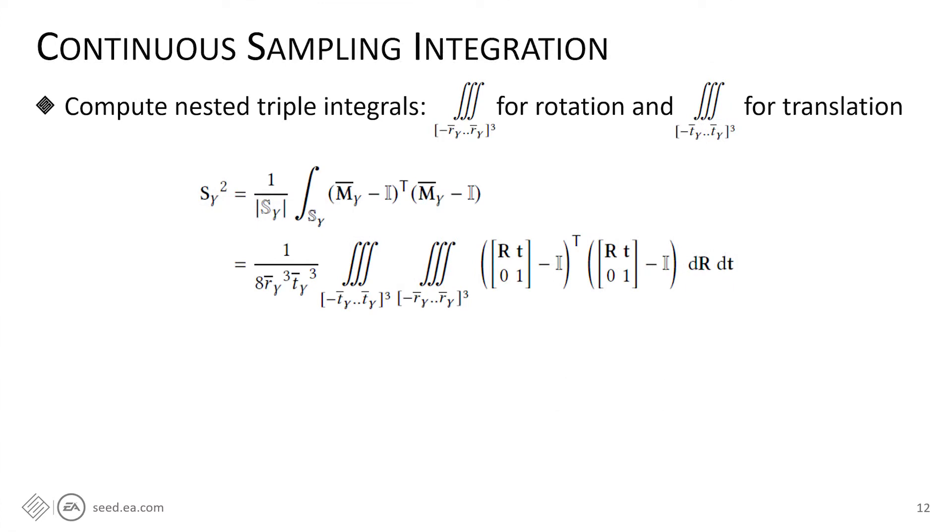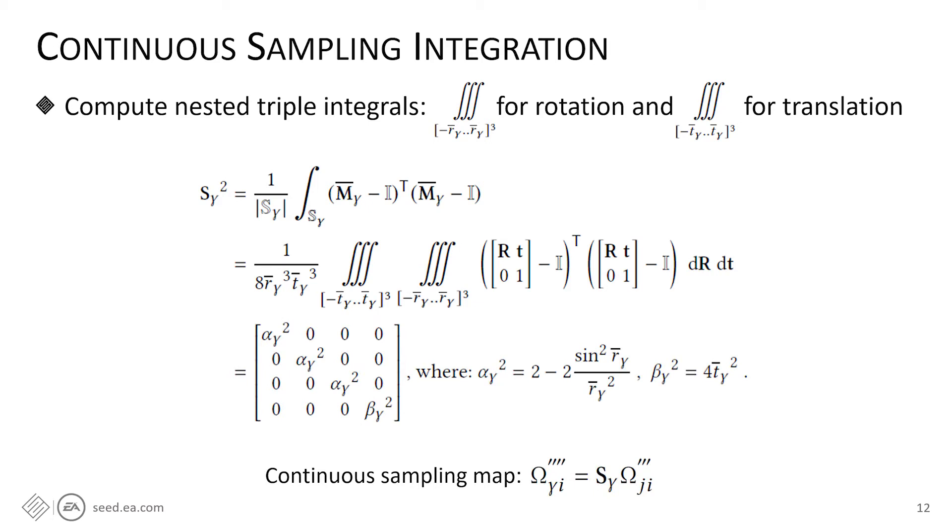Our fourth and final map is the continuous sampling map. So after the hierarchical and the coordinate changing maps in the previous steps, we have moved the bone transformations to their local coordinates. It makes the new bone transformation, m bar sub gamma, distributed around the identity matrix. We can compute the integral of this transformation over the range of rotation r bar sub gamma and the range of translation t bar sub gamma. And this integral has the explicit solution like this, which is our map to represent the range of motions for the pose sampling.